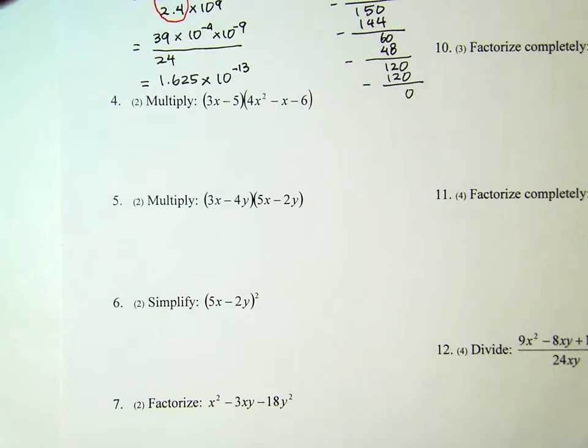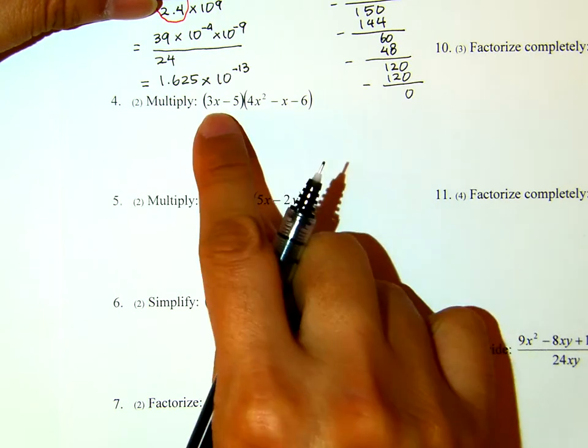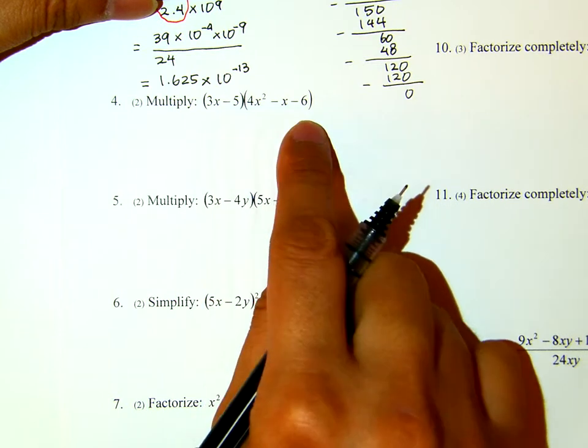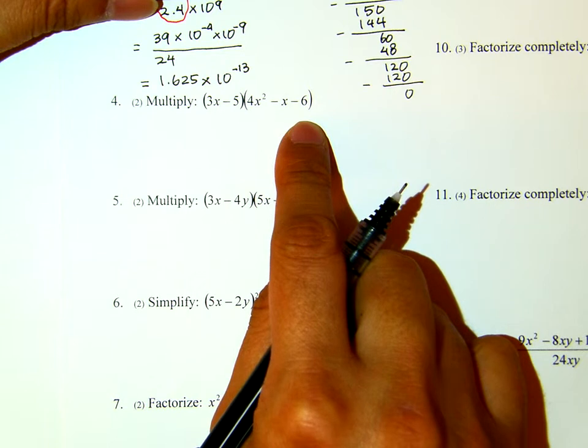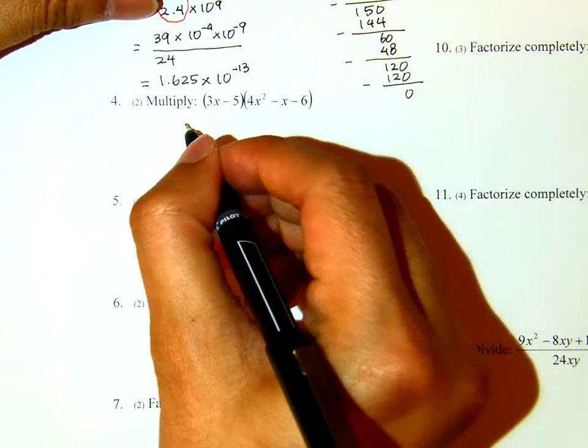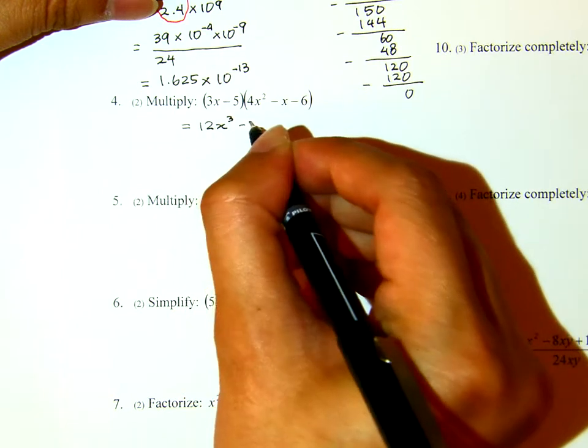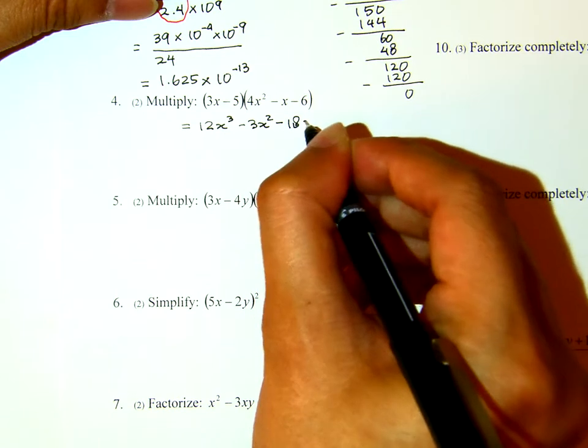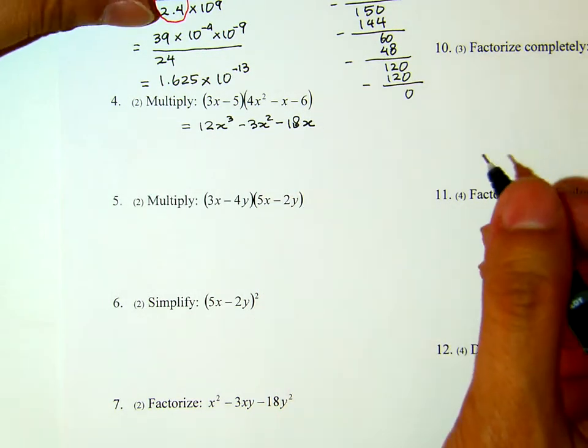Number 4: Multiply. We have 2 terms here and 3 terms there. If I expand this, we expect to see 6 terms before we combine like terms. I will first distribute the 3x, and then I will distribute the negative 5.